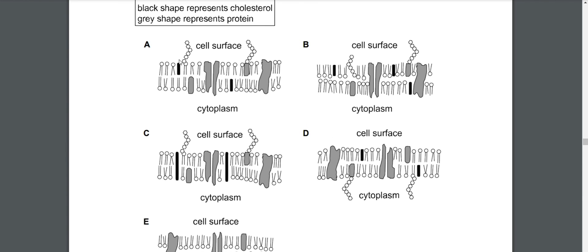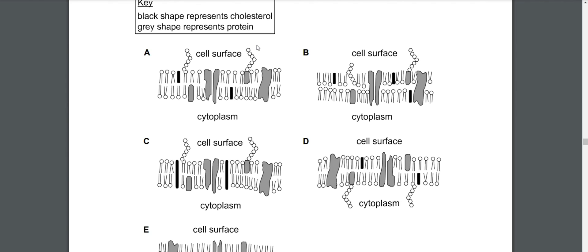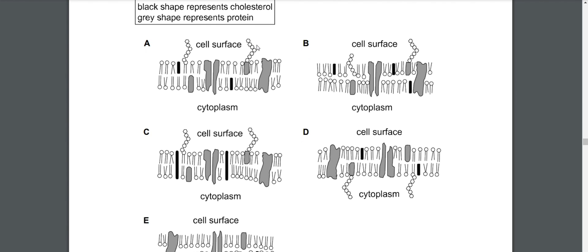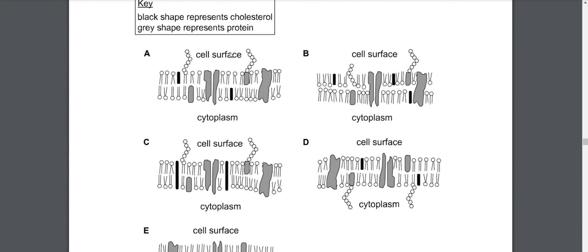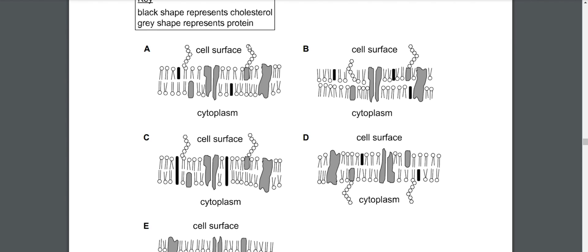A is more accurate than D because the glycoproteins - this stuff represents glycoproteins - these work as receptors, they can accept signals like hormones. It's more accurate to represent them pointing towards outside the cell in the interstitial fluid because that's where the signals like hormones come from. So A is the correct answer.